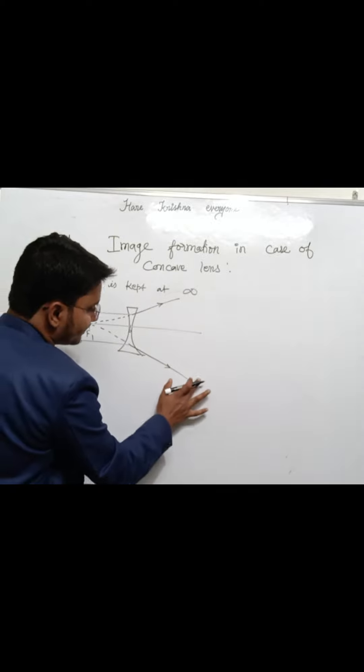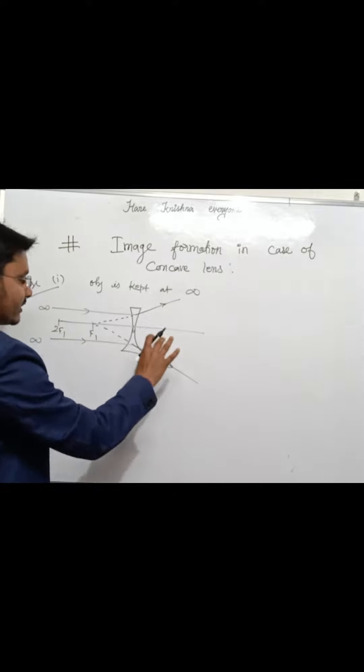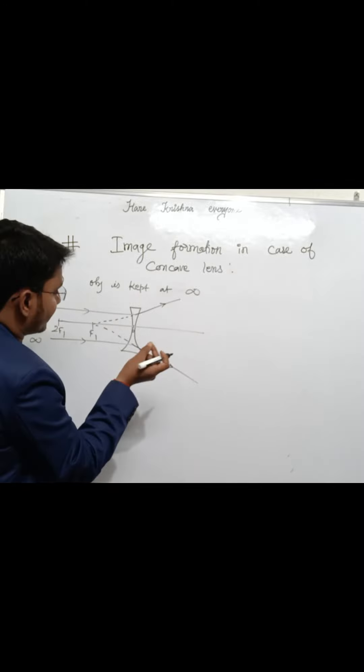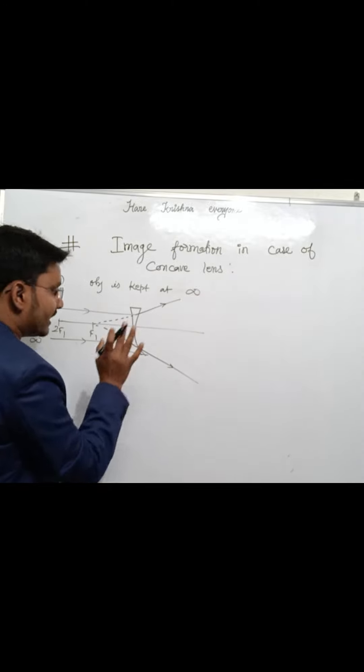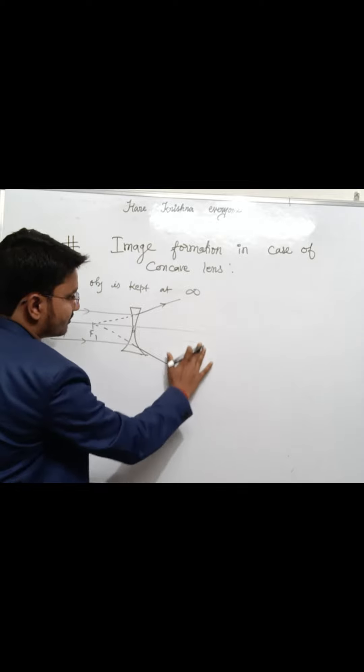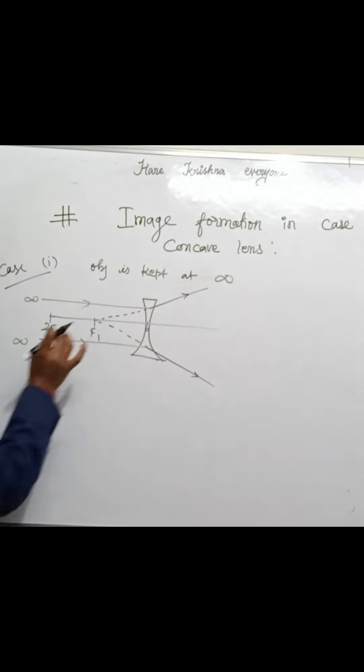These diverging rays are not going to meet at any point. The point at which these diverging rays appear to meet is where the virtual image will be formed. It will be a point size virtual image.